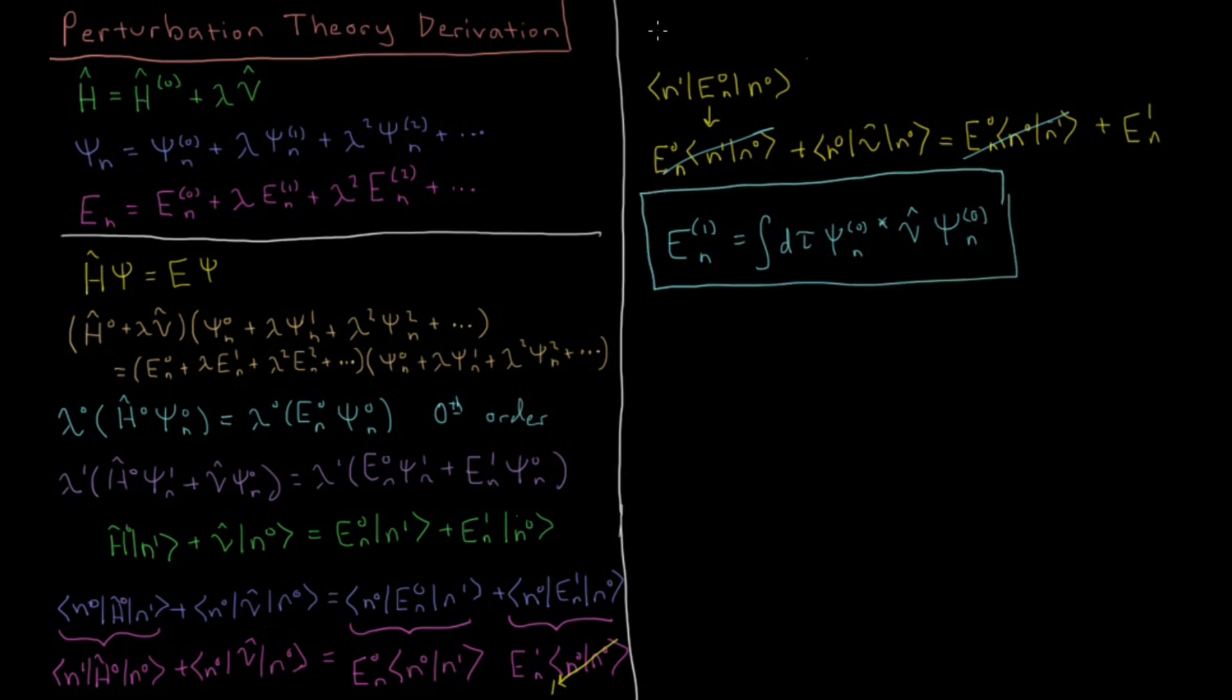So this is what we said on the previous video, that the first order correction to the energy is just going to be this integral of the perturbation, the expectation value of the perturbation acting on the zeroth order wave function. So this is definitely the easiest one to derive. You could continue this type of logic and derive the second, third, fourth corrections beyond that, but we're mostly just going to be concerned about first order perturbation theory and maybe look a little bit into what these first order energy corrections and wave function corrections look like.